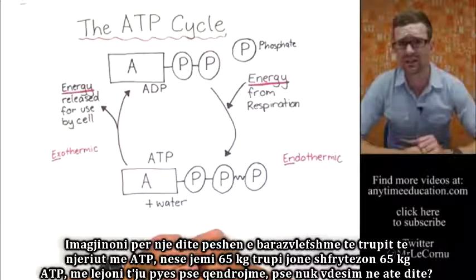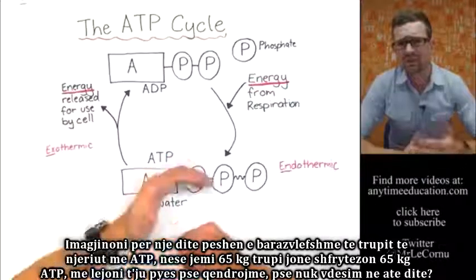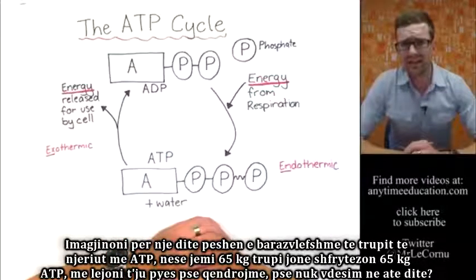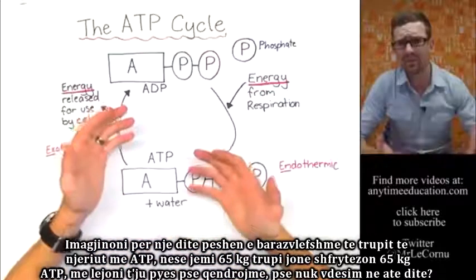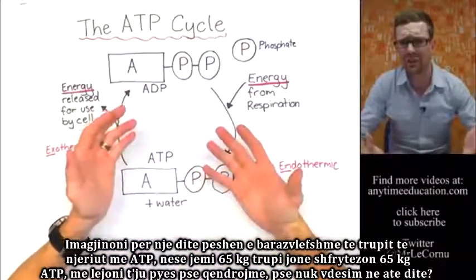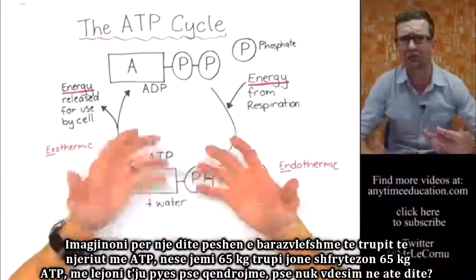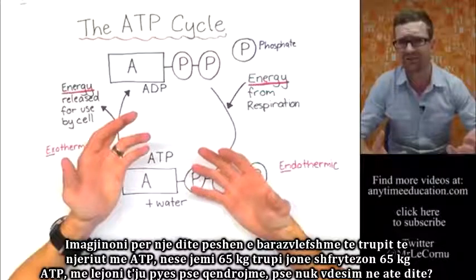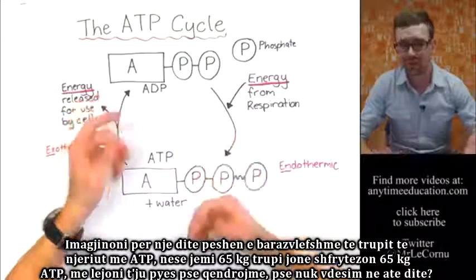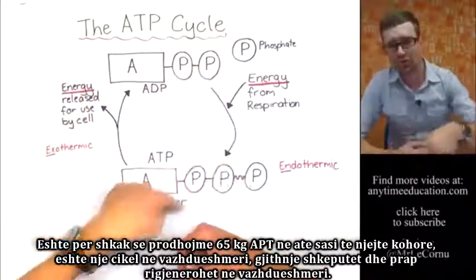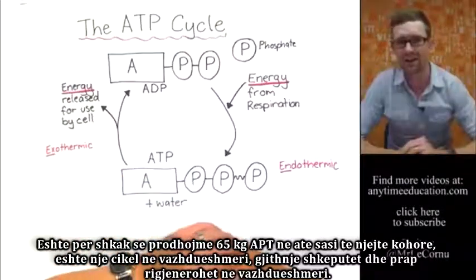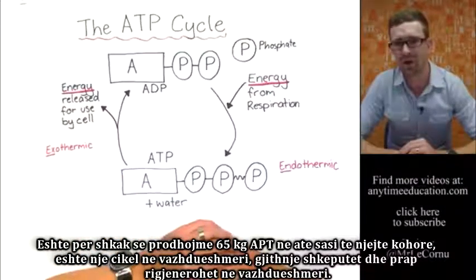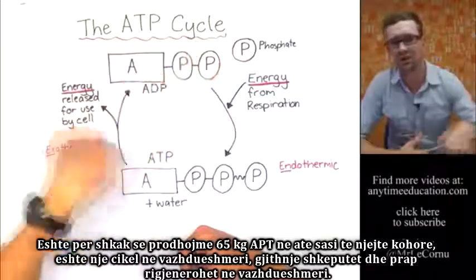So let's say you're 65 kilograms. In one day, your body uses up 65 kilograms of ATP. So why are you still here? Why don't you vanish in that day? It's because you produce 65 kilograms of ATP in that same amount of time. It's a continuous cycle — always breaking it down and regenerating it over and over again.